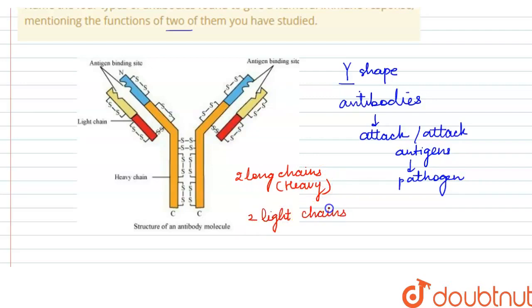Light chains are very short, so when we write the formula we write H2L2. In the diagram you will see the long chain and the short one. Between these two, the bonds present are disulfide bonds.